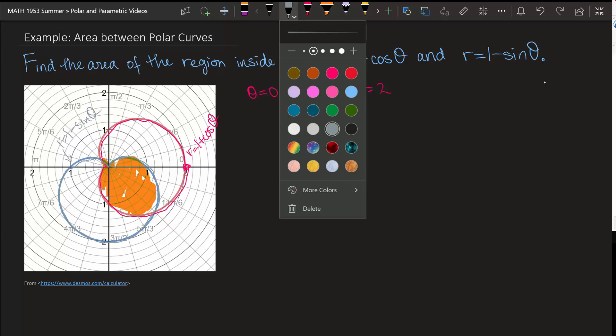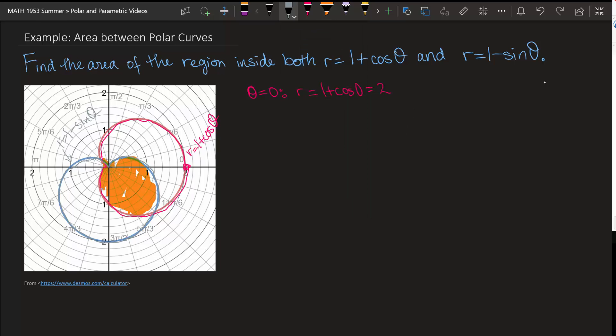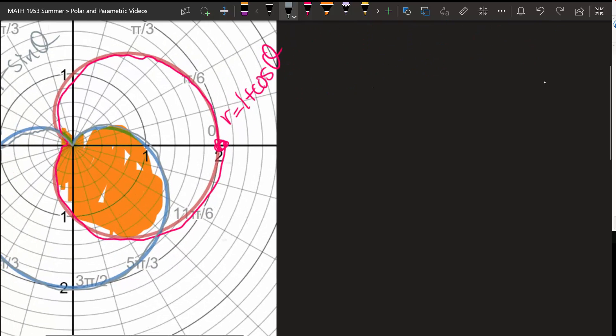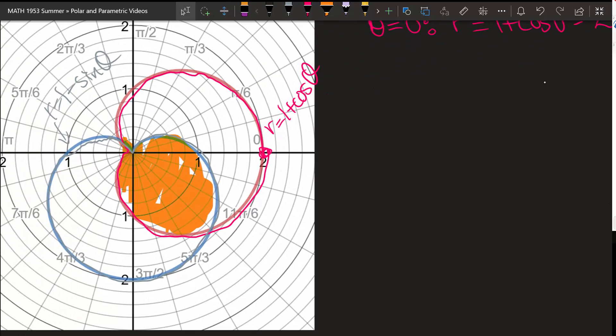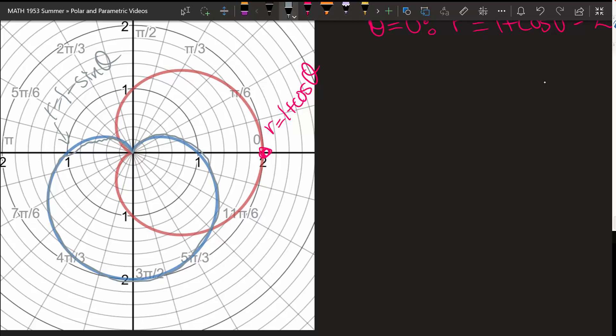Alright, so our goal now is going to be to determine what the area of this curve is. I need to examine the points of intersection and then figure out how that plays into the area of this curve. So if we zoom in here a little bit, which I'm going to do so we can really see clearly...